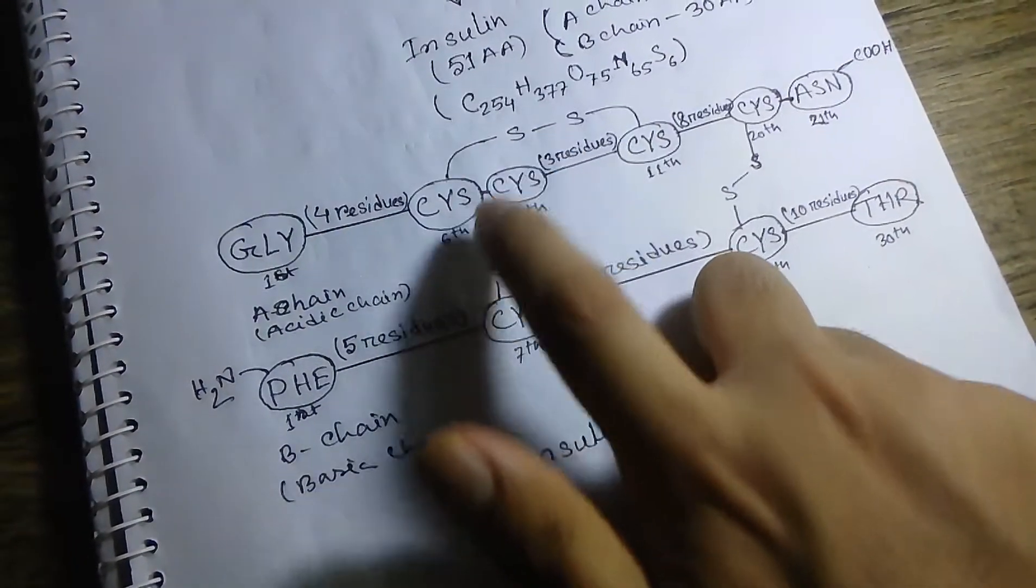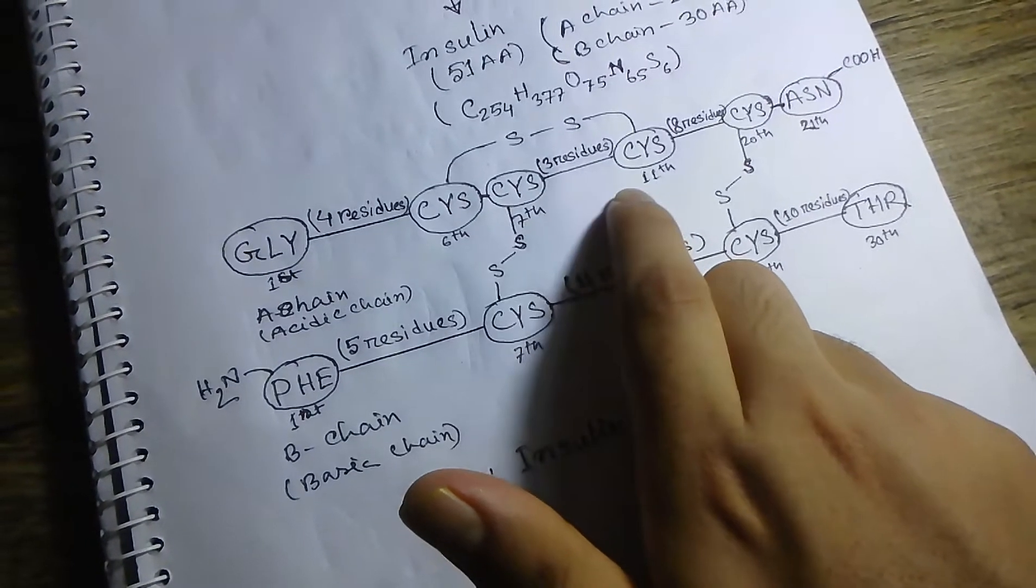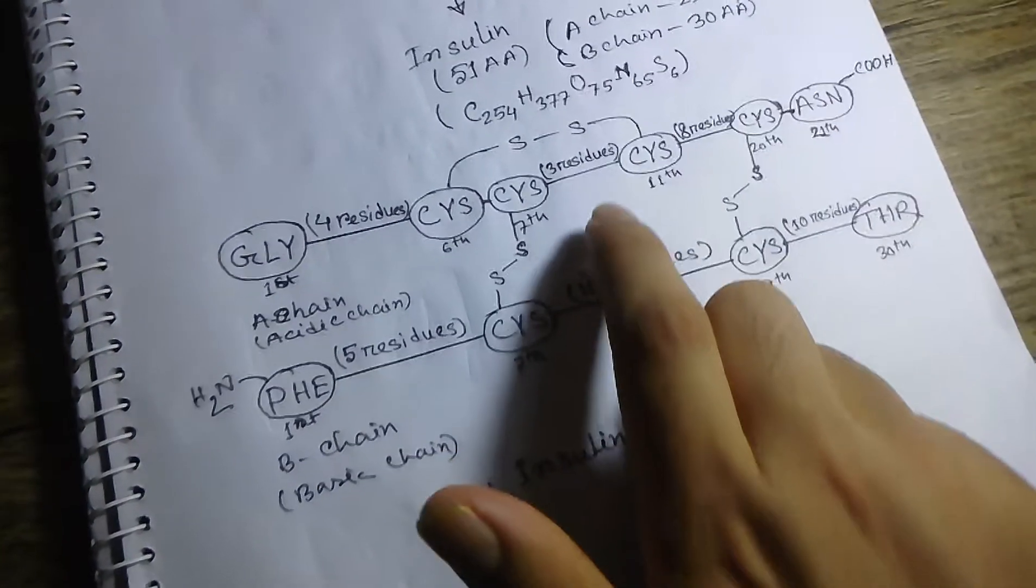We also have an intra-chain disulfide bridge in A chain at the 6 position and 11th position. This is the molecular formula of insulin.